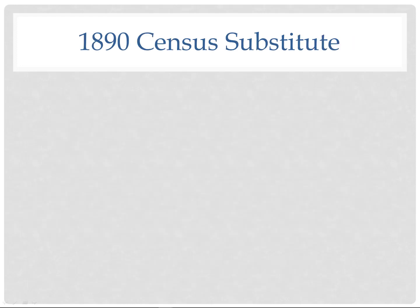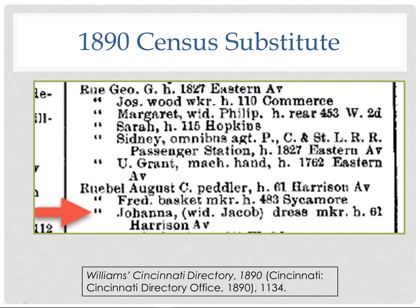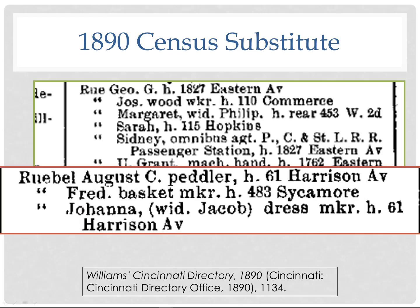You can also use city directories as an 1890 census substitute — we're all frustrated by the fact that this census is missing. Here I found Joanna, listed as the widow of Jacob. She is my great-great-grandmother. I found Joanna and Jacob living together in 1880 and Joanna living with her daughters in 1900, so I didn't have a good idea of when Jacob had died. This city directory tells me he was deceased prior to 1890, cutting in half the interval during which I need to look for his death record.